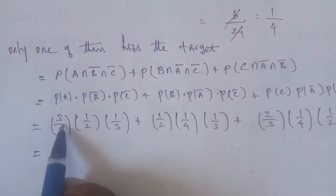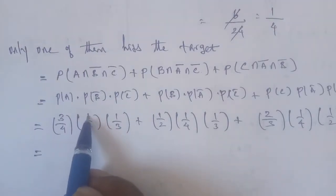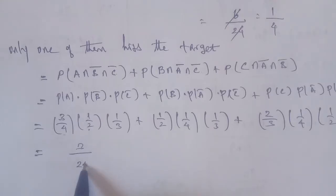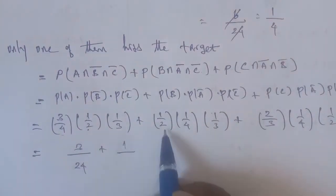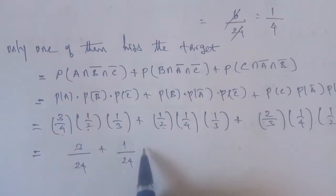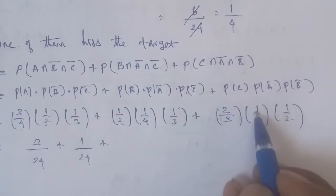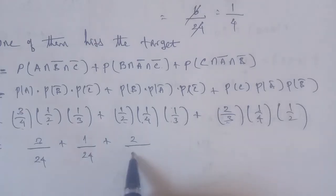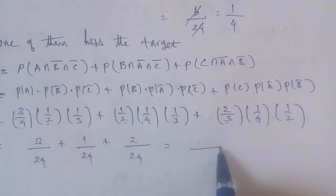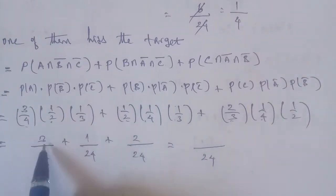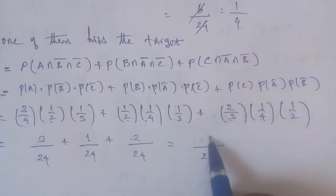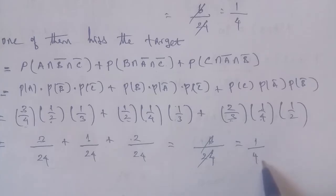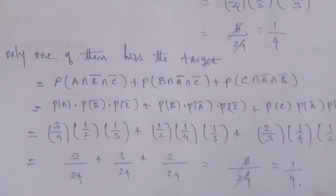Calculating the numerators: 3 ones are 3, denominator 4 × 2 × 3 = 24; plus 1 × 1 × 1 = 1, denominator 2 × 4 × 3 = 24; plus 2 × 1 × 1 = 2, denominator 3 × 4 × 2 = 24. Adding: 3 plus 1 plus 2 = 6 over 24, which simplifies to 1 by 4. So Sub-question 2 answer is 1 by 4.